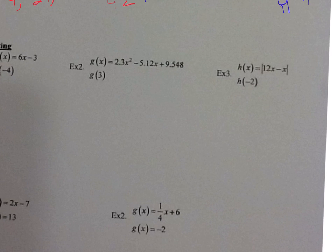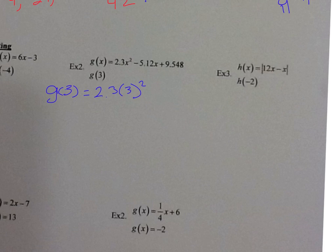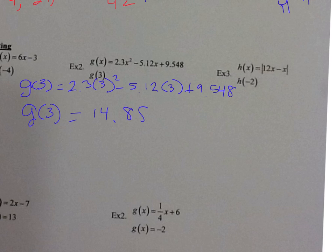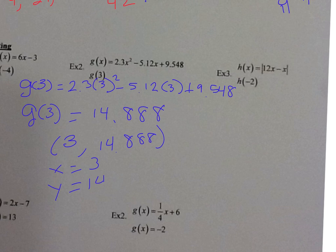For example 2, we have g of x is equal to 2.3x squared minus 5.12x plus 9.548, and we're looking for g of 3. So the input is 3 — we plug it in: 2.3 times 3 squared, minus 5.12 times 3, plus 9.548. Plug that into your calculator and we get 14.888. So when x is 3, the y value is 14.888.